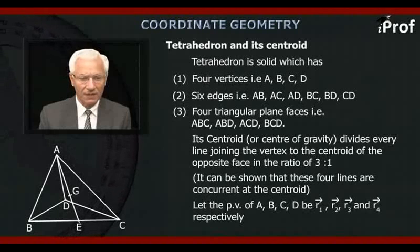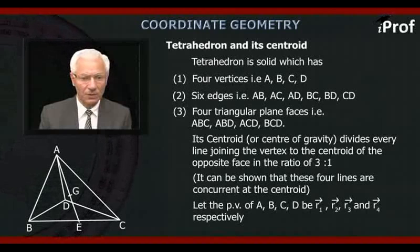That defines the tetrahedron. Its centroid, or also called center of gravity, divides every line joining the vertex to the centroid of the triangular opposite face in the ratio of three to one. It can be shown that these four lines are concurrent at the centroid.